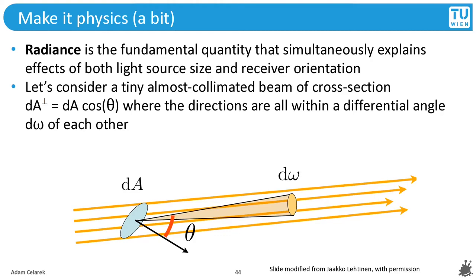Okay, let's go back to something serious that is actually important. Radiance is the fundamental quantity that simultaneously explains both the light source size and receiver orientation. Let's consider this beam of light. It has a cross section of dA. This is a differential, so the cross section is infinitesimally small. The direction is also not a single direction but a differential direction, so the range of directions is infinitesimally small.